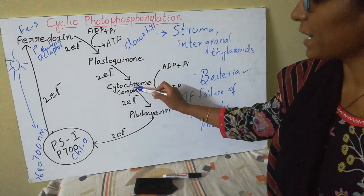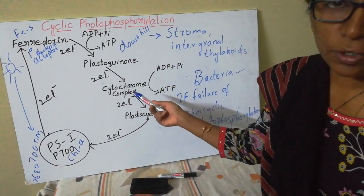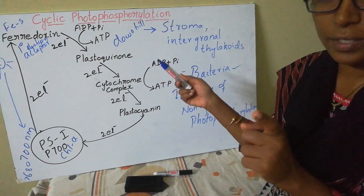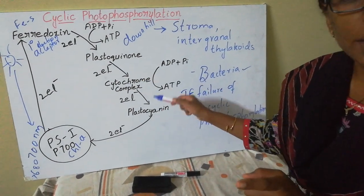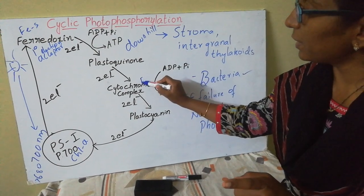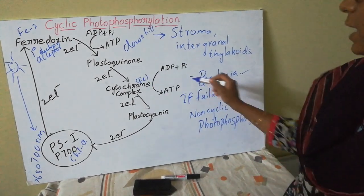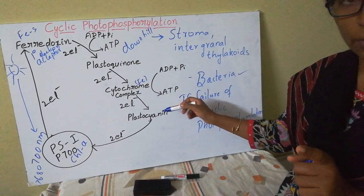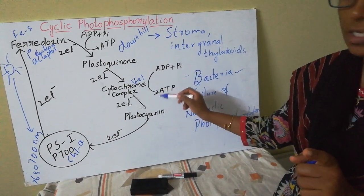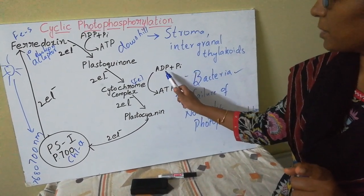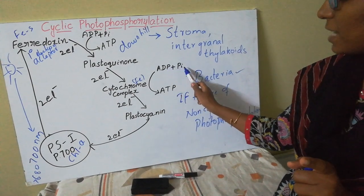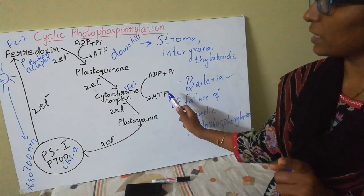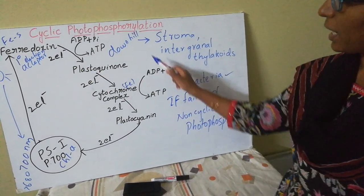Next, the electrons are further passed from plastoquinone to the cytochrome complex — that is cytochrome b6 as well as cytochrome f, which are iron-containing proteins. When electrons pass through the cytochrome complex, energy is released again, and this energy is accepted by ADP and inorganic phosphate to synthesize another ATP molecule.